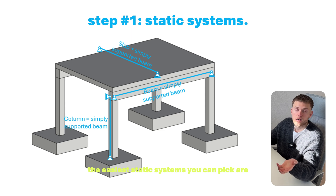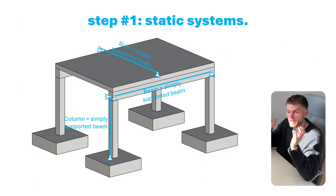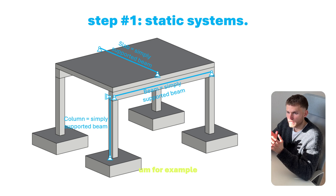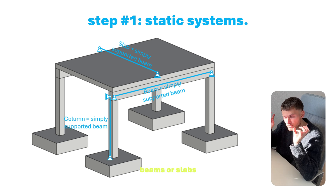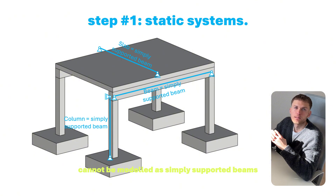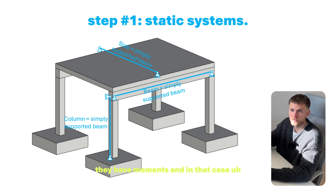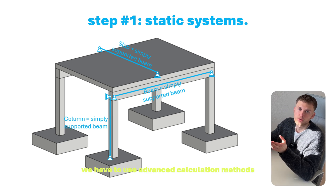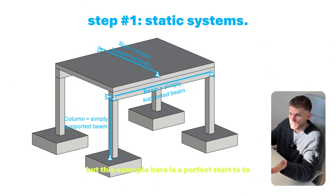The simplest static systems to pick for vertical load transfer are simply supported beams and columns, because there are no bending moments in the supports. For example, precast hollow core slabs are simply supported, but in-situ slabs supported by columns and beams cannot be modeled as simply supported because they are continuous. At the points of support they have moments, so we usually have to use advanced calculation methods like the finite element method. But this example is a perfect start to understand vertical load transfer.